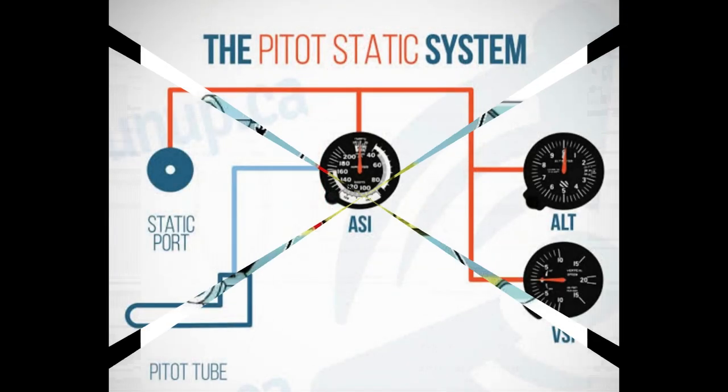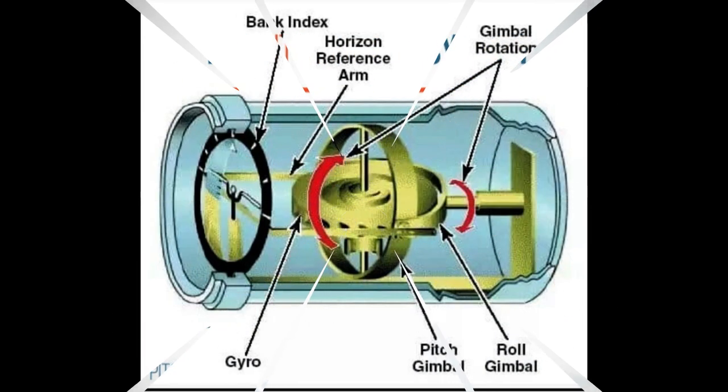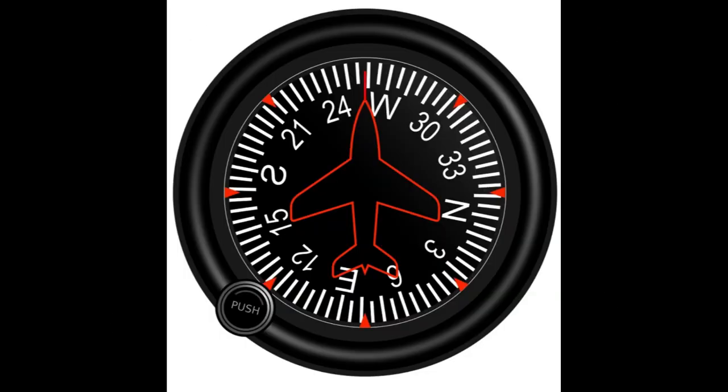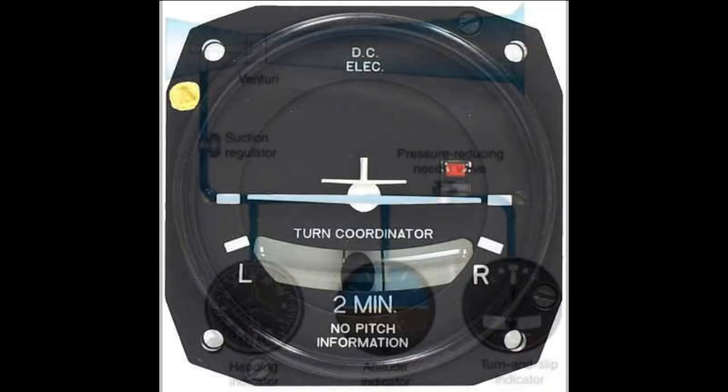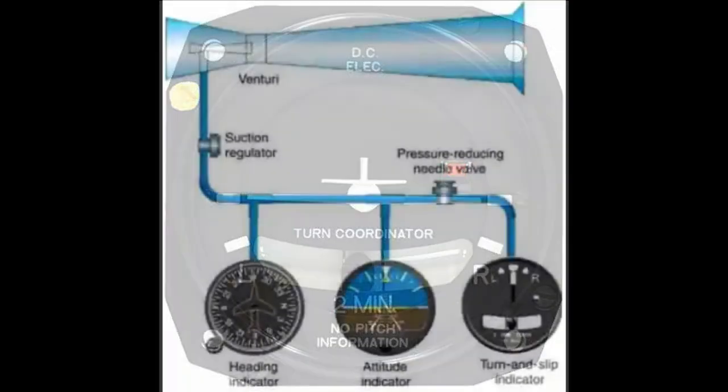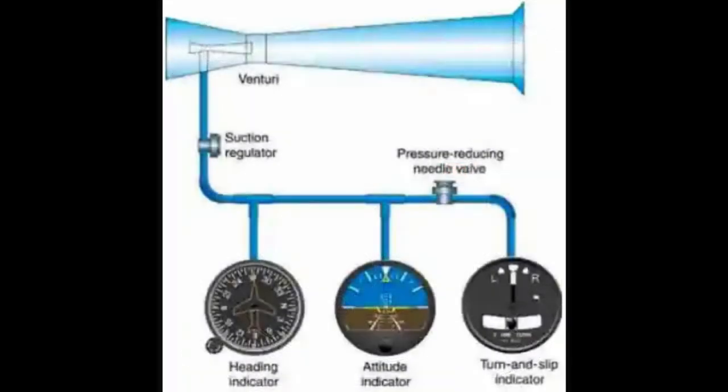The internal gyro of the gyroscopic instruments — AI, HI, and turn indicator — is powered by vacuum, pressure, or electricity.